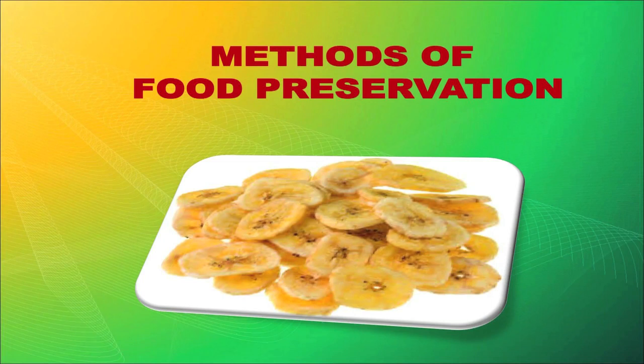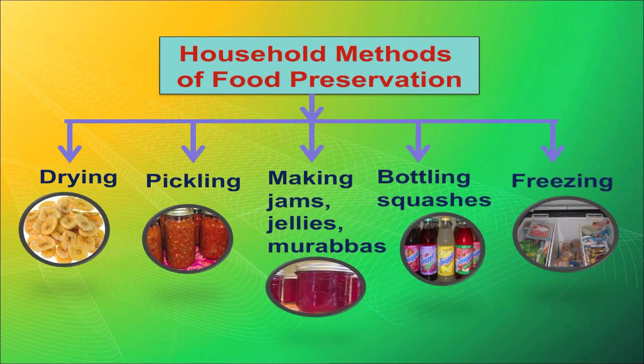Till now you have understood the importance of food preservation and the principles of food preservation. Now we will talk about the methods of food preservation. In this picture we have shown different types of preserved food — how they are kept on a shelf, how they are in different jars. Some of the household methods of food preservation can be categorized into five ways: drying, pickling, making jams, jellies and murabbas, bottling and squashes, and freezing.